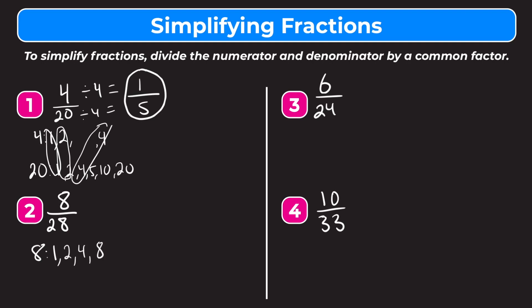Now for 28, we start with 1 and 28. 28 can also be divided by 2, giving us 2 and 14. And we also have 4 and 7. Looking at both sets of factors, the common factors are 1, 2, and 4.